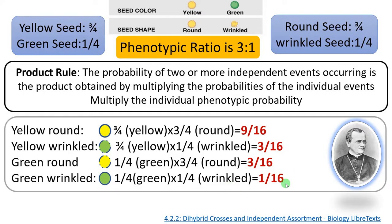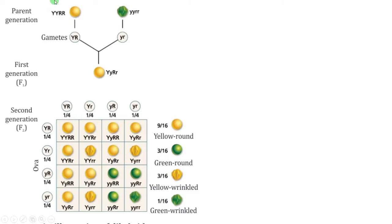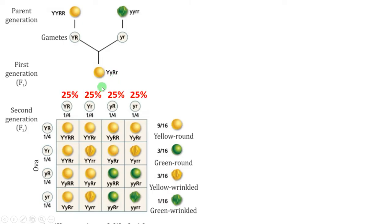He conducted the dihybrid cross using two distinct traits. He crossed capital Y capital Y capital R capital R (yellow round) with small y small y small r small r (yellow wrinkled). The gametes are capital Y capital R and small y small r. The F1 becomes capital Y small y capital R small r. During gamete formation, all possible combinations are formed in equal proportions: capital Y capital R, capital Y small r, small y capital R, and small y small r — all formed in equal percentage.